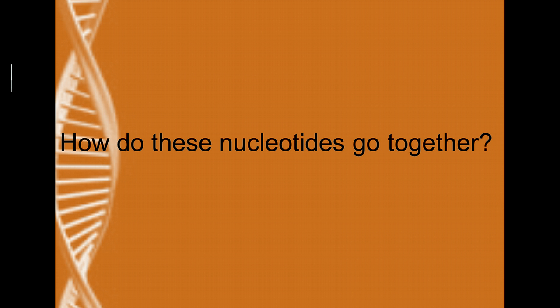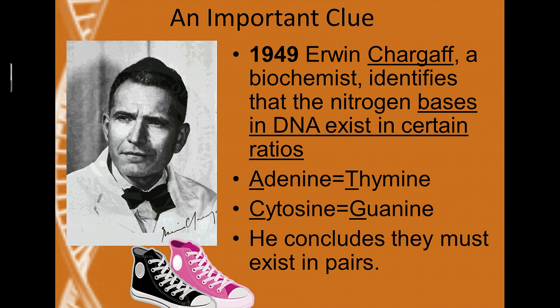We have these two types of bases, but how do they go together? The answer was derived by scientist Erwin Chargaff in 1949. He was experimenting with samples of DNA and comparing their basic composition. No matter which organisms he analyzed, he discovered that there always seemed to be certain ratios of bases. Wherever he saw an adenine, there was an equal amount of thymine. Wherever he saw a C, there seemed to be an equal amount of guanine.